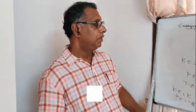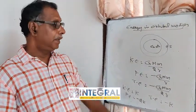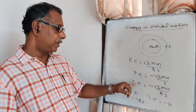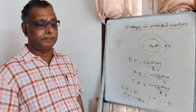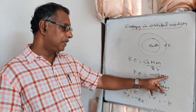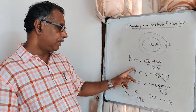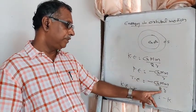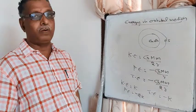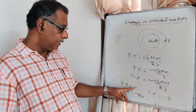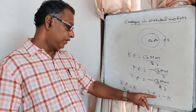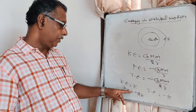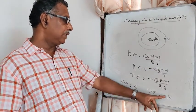For a satellite in orbital motion: kinetic energy = G·M·m / 2R; potential energy = −G·M·m / R; total energy = −G·M·m / 2R, where R is the orbital radius. A useful shortcut: if KE = K, then PE = −2K and total energy = −K.